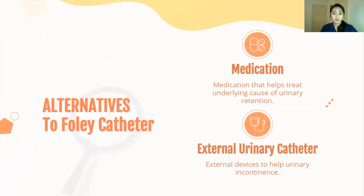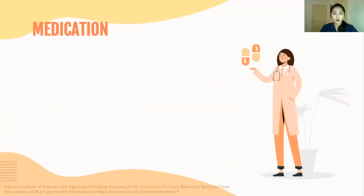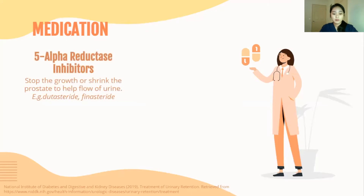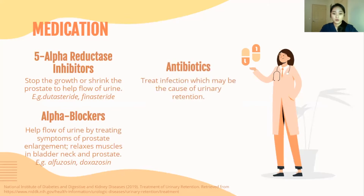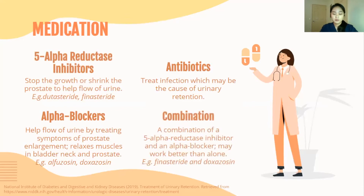There are two types of alternatives to Foley catheters: medications and external urinary catheters. For urinary retention, there are a few medication options. First, 5-alpha reductase inhibitors stop the growth or shrink the prostate to help the flow of urine. Second, alpha blockers help the flow of urine by treating symptoms of prostate enlargement and relaxing the muscles in the bladder neck and prostate. Third, antibiotics can be used to treat infection, which may be the cause of urinary retention. A combination of 5-alpha reductase inhibitor and alpha blocker may work better than individual medications alone.